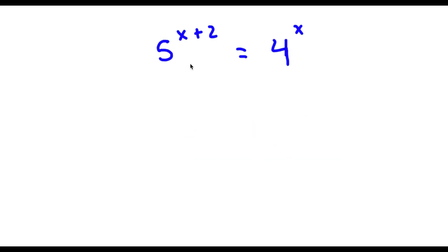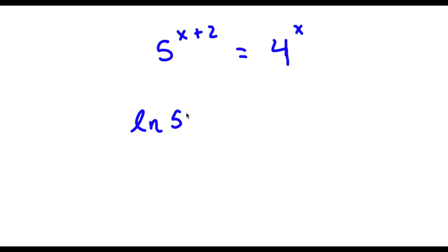Alright, so now I have 5 to the power of x plus 2 is equal to 4 to the power of x. The first thing I'm going to do is take the ln on both sides, or natural log. So now I have ln 5 to the power of x plus 2 is equal to ln 4 to the power of x.